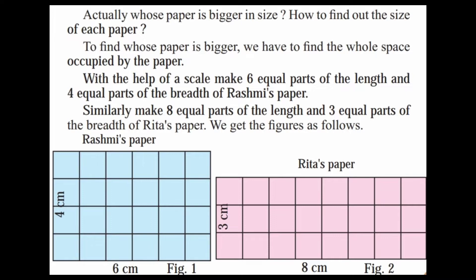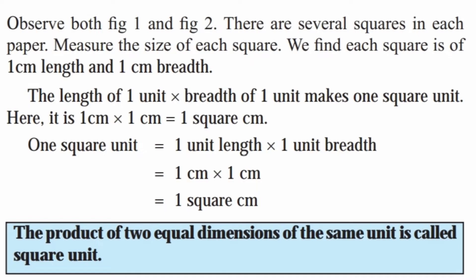A length of 1 unit and breadth of 1 unit makes 1 square unit. Here it is 1 cm into 1 cm, that is 1 square cm.